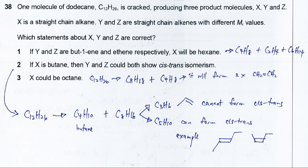For this question, dodecane C12H26 is cracked producing three product molecules X, Y, and Z. X is a straight chain alkane. Y and Z are straight chain alkenes with different molar mass. Which statements are correct?